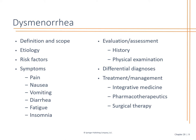Dysmenorrhea is painful or difficult menses. Symptoms include pain, nausea, vomiting, diarrhea, fatigue, and sometimes insomnia secondary to those symptoms. Take a good health history, find out when they're having these painful menses, and look at other differential diagnoses — is it only with menses? Is it true dysmenorrhea? Check for a family history; often you'll hear that mom also had really bad, heavy, painful periods, which is where genetics comes into play.